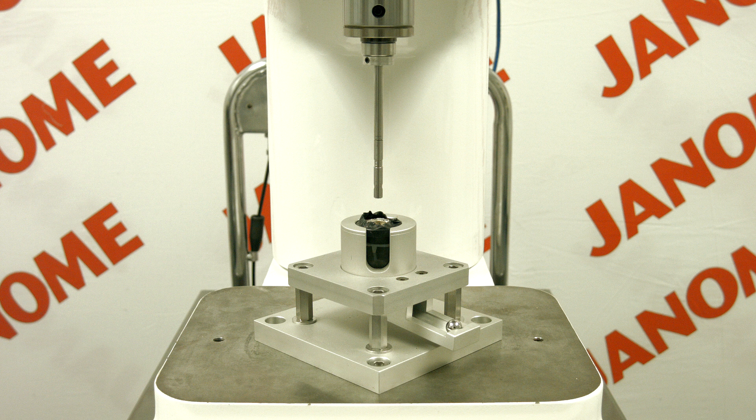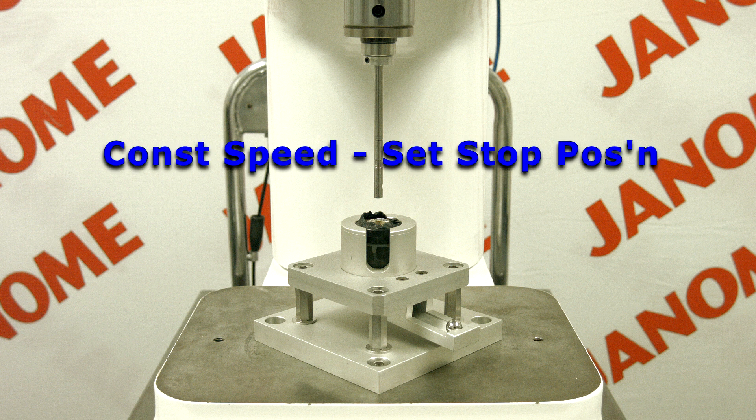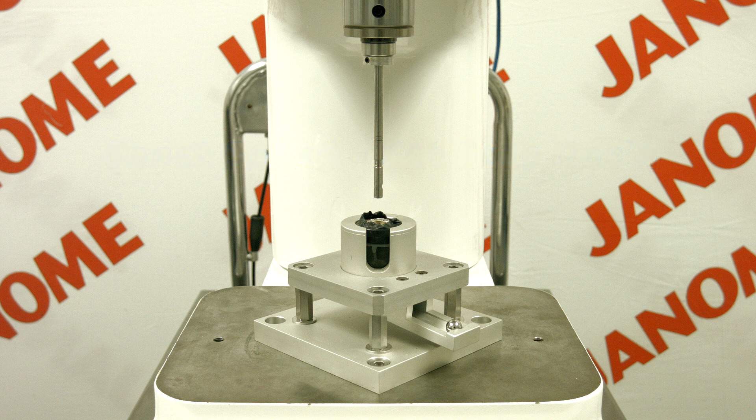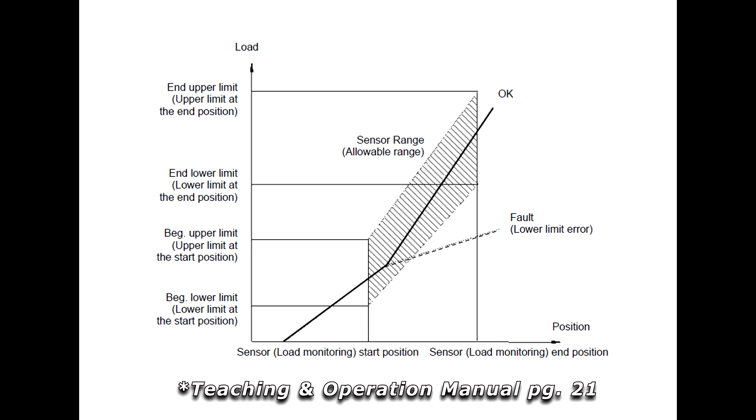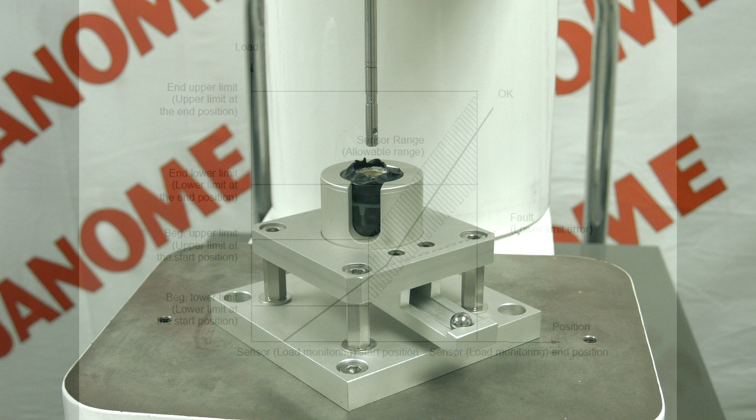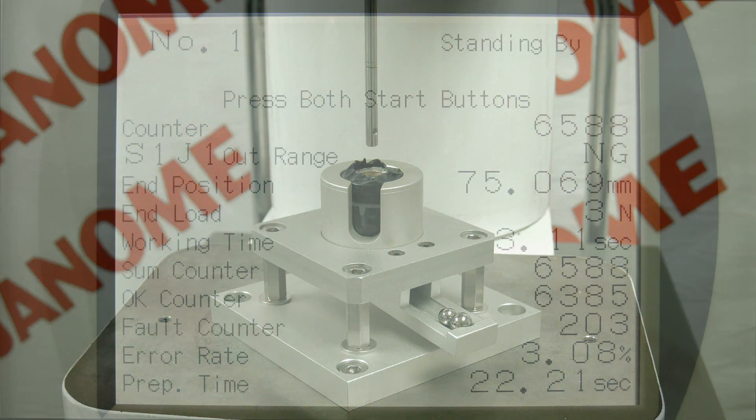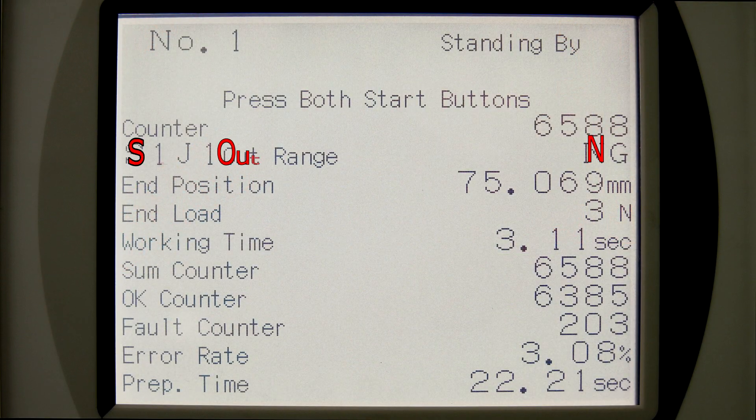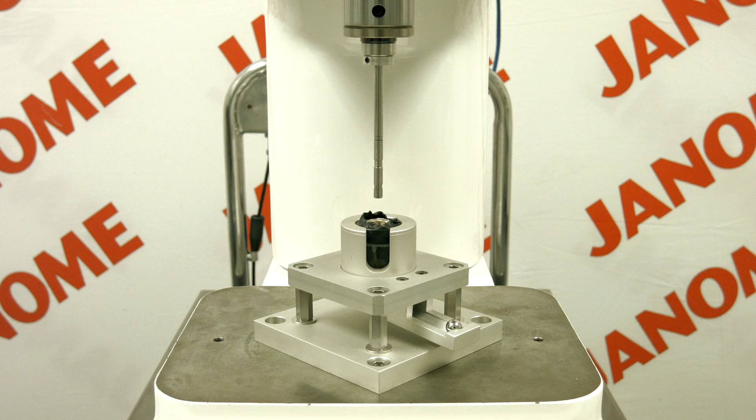The ElectroPress has various sensor functions. In this section, the load judgment within a position range in the Constant Speed Set Stop Position Mode will be explained. By setting the sensor range, the ElectroPress can monitor the load continuously. The sensor allowable range can be set by designating the upper and lower load limits at the sensor start and end positions. If the load falls outside the sensor allowable range, the RAM will ascend and an alarm will sound. The LCD screen will display a fault sign, as well as the load and position information when the fault occurred. If the press is set to record data, the sampling file will contain this information as well.